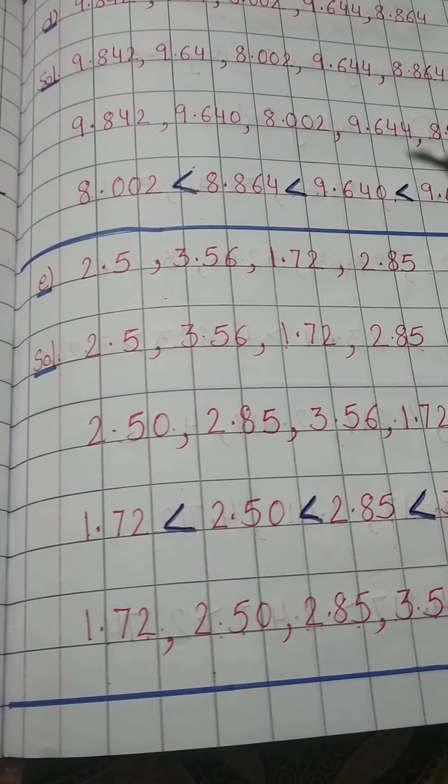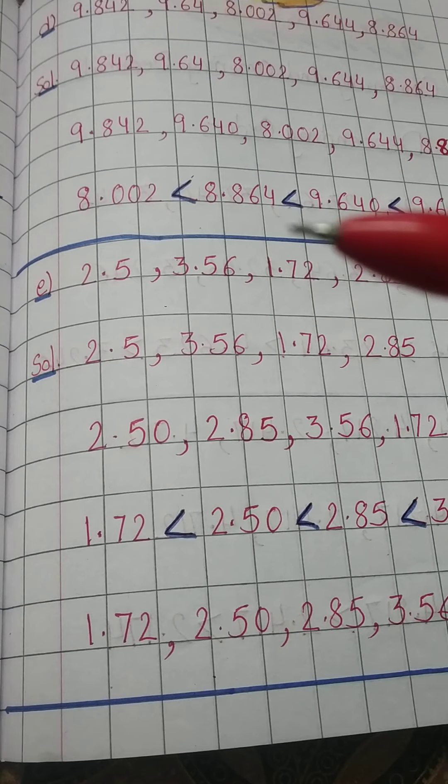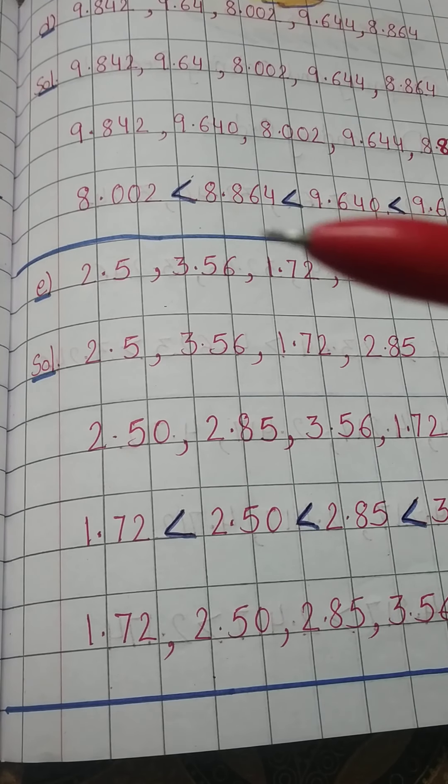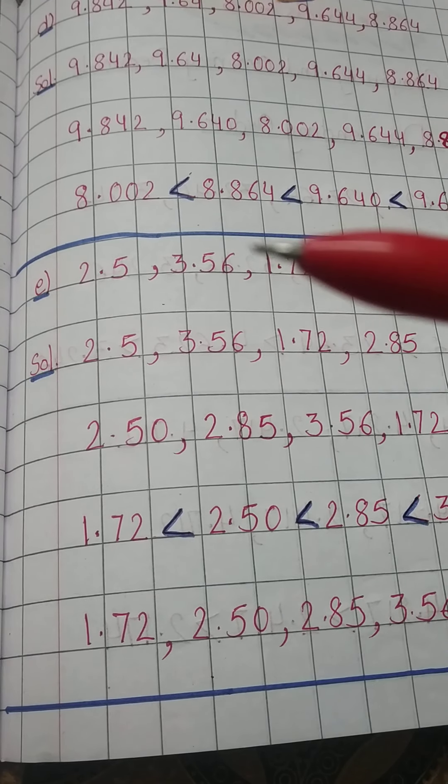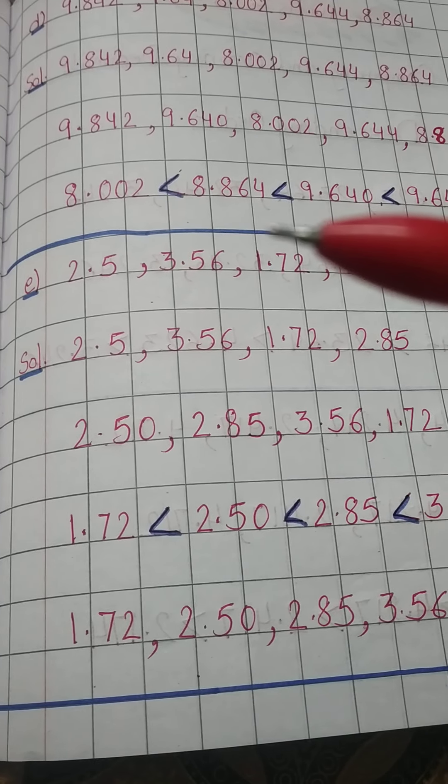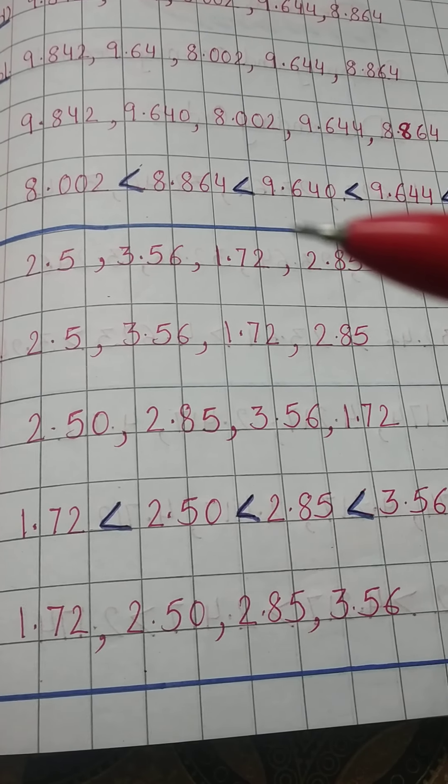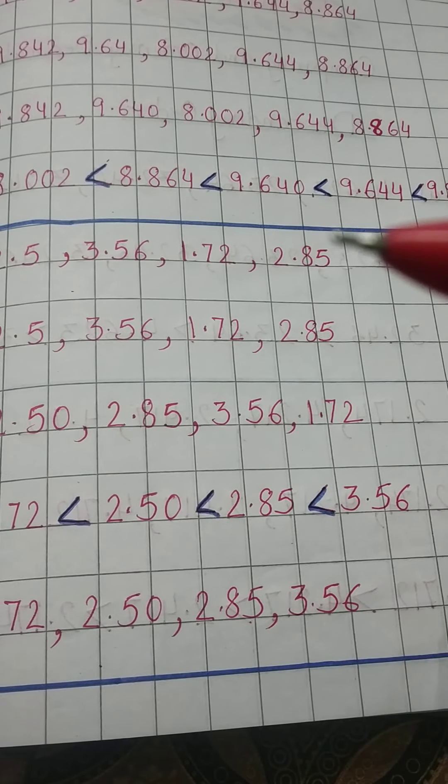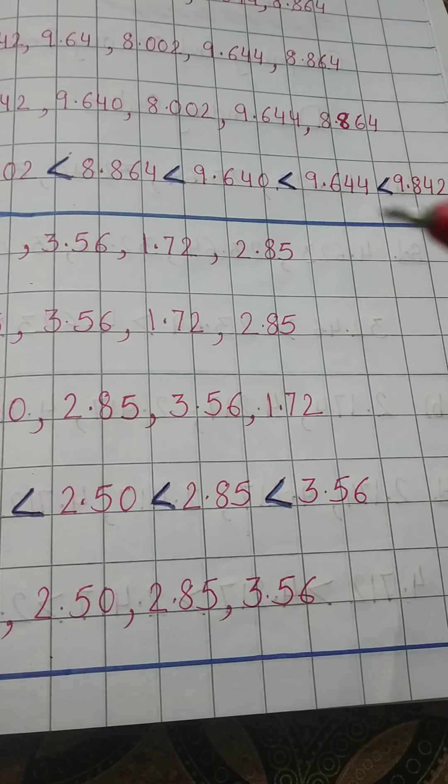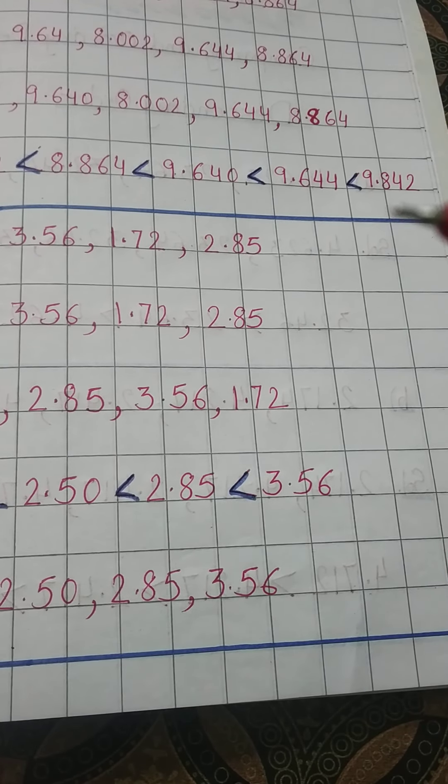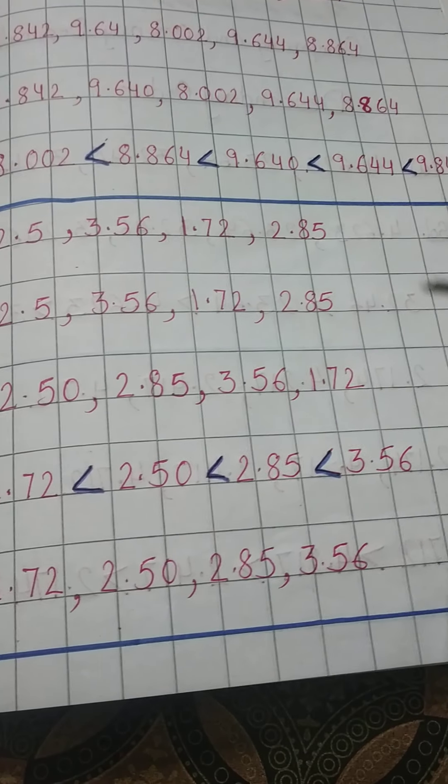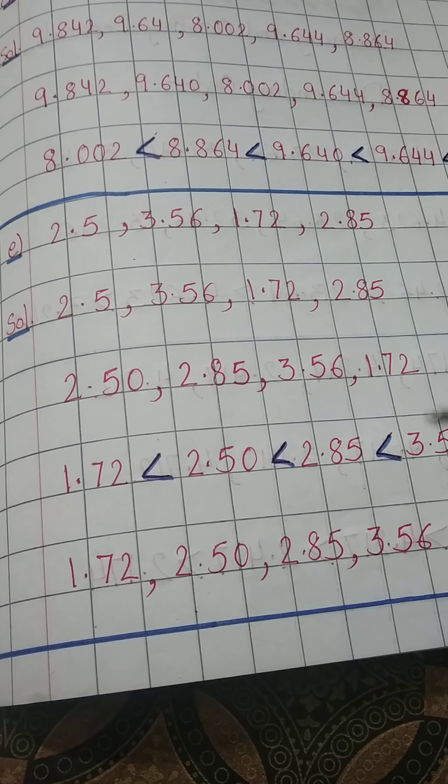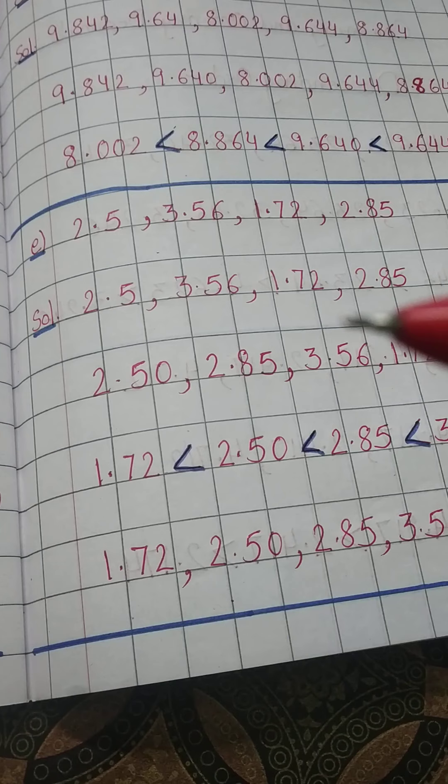By putting commas, and you can write like this also by putting this one: lesser sign. That is 8.002 is less than 8.864, less than 9.640, 9.644 is less than 9.842.